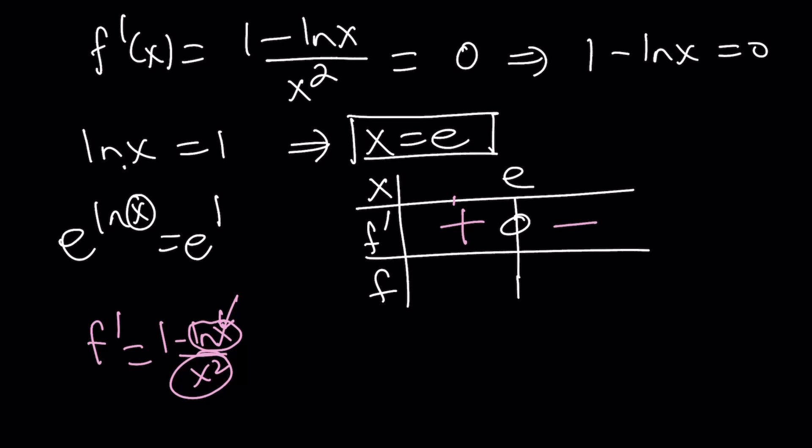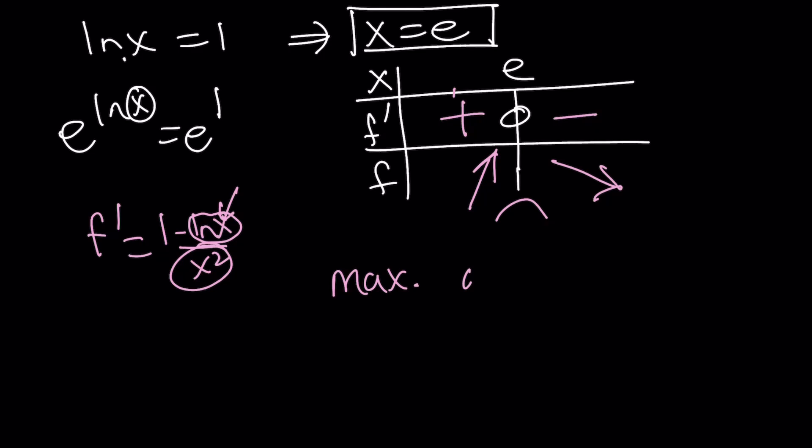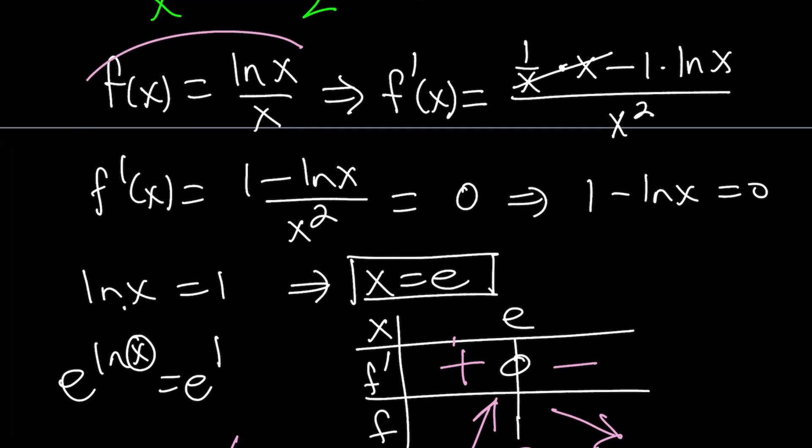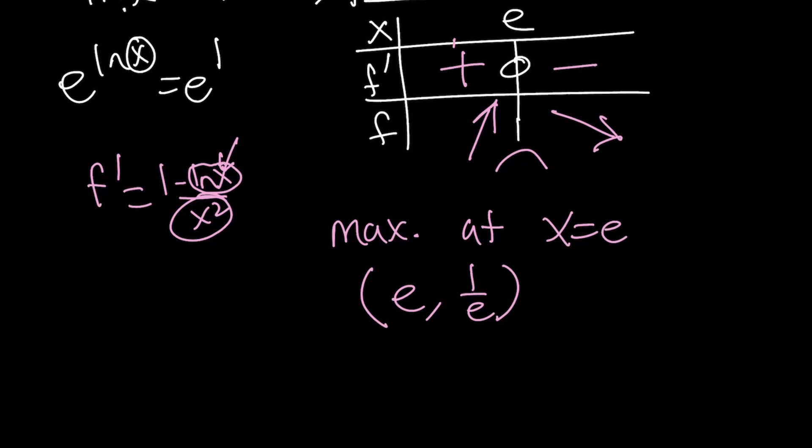So you only need one value to test. This means that our function is going to be increasing on this interval and decreasing on this interval, which also means that it has a maximum at x equals e. So we have a max at x equals e. To be more specific, it is at e comma 1 over e. Because if you replace x with e in f of x, you get ln e over e, which is 1 over e. So that's our maximum point for f.